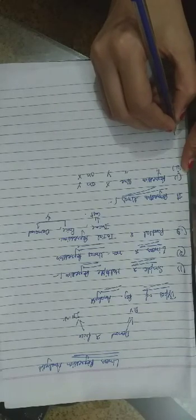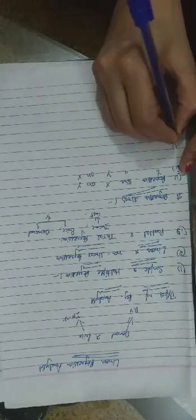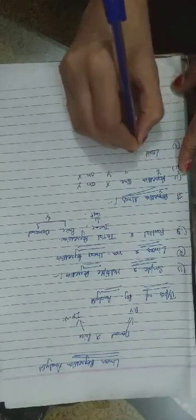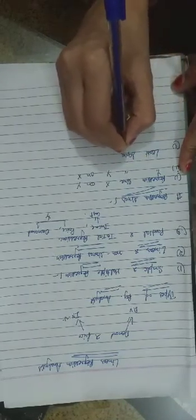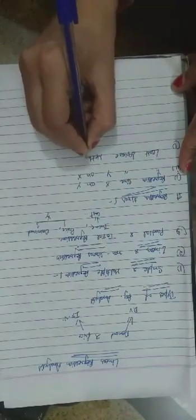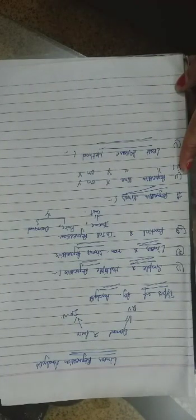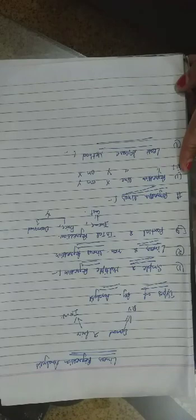Next we discuss methods of obtaining regression lines. The first method is the least square method. Regression lines are constructed by this method, where a regression line is fitted through different points such that the sum of squares of the deviations of the observed values from the fitted line shall be least.